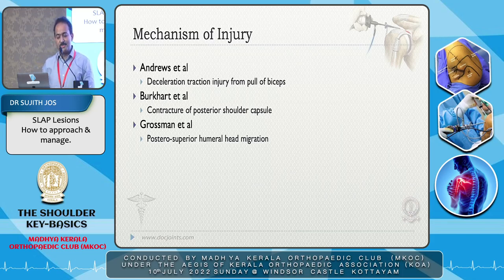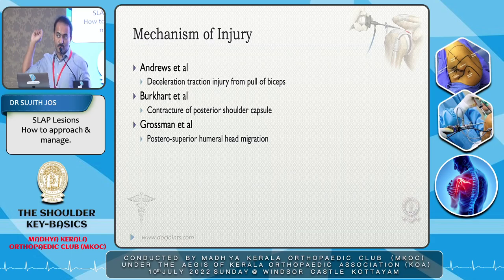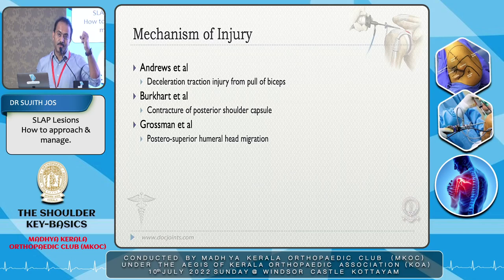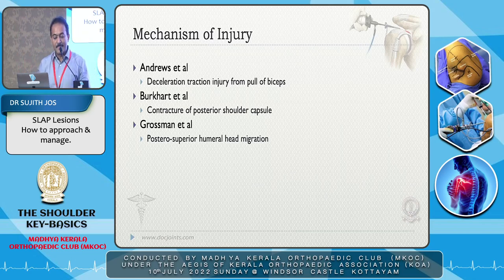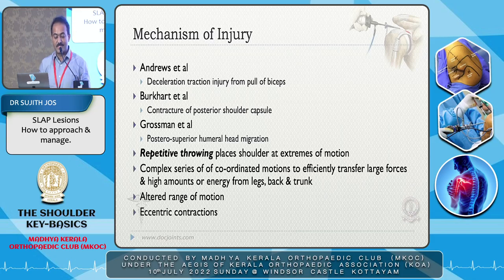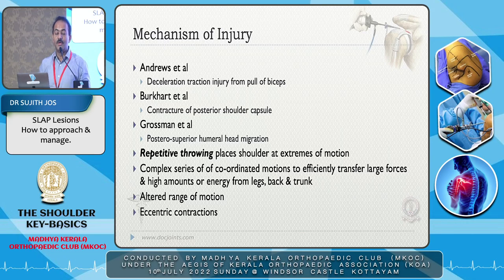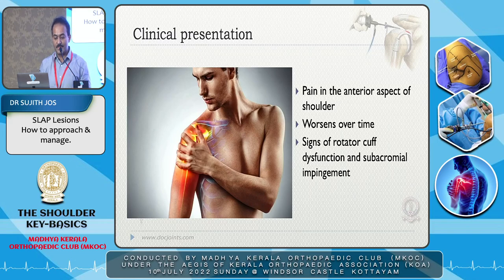The mechanism of injury is usually due to deceleration or traction injury from the pull of the biceps. In a throwing movement, the biceps upper end can pull off from the superior labrum. Burkhart et al. said when there is a tightened posterior capsule and this pull happens, it tears more. Superior humeral head migration is also described as a mechanism. SLAP tears are mainly seen in repetitive throwing and overhead activities, with altered range of motion and eccentric contractions leading to superior labral tears.